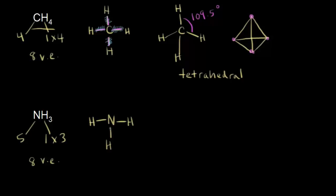Let's see how many valence electrons we've used so far: 2, 4, and 6. So 8 minus 6 is 2 valence electrons left. We can't put them on our terminal atoms because the hydrogens are already surrounded by 2 electrons. So we go ahead and put those 2 valence electrons on our central atom, nitrogen, like that. Now we've represented all 8 valence electrons for our dot structure.